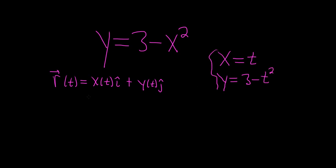All we do now is plug these in to our formula. So r of t is equal to, well, let's see, x of t is just t i hat, and then y of t is 3 minus t squared j hat.